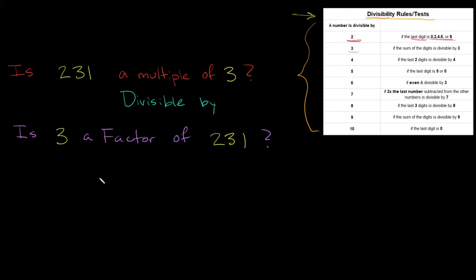Now let's move on to 3. Is 231 a multiple of 3? Or is 231 divisible by 3? Is 3 a factor of 231? Again, these are all asking basically the same thing. So let's refer to our table — a number is divisible by 3 if the sum of the digits is divisible by 3.